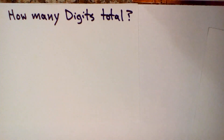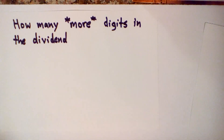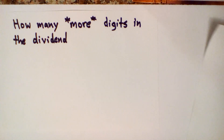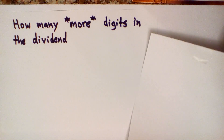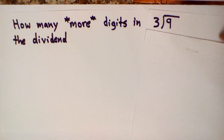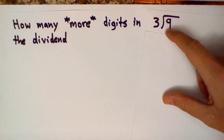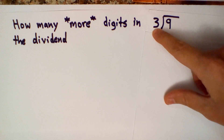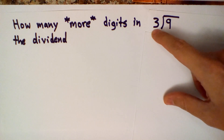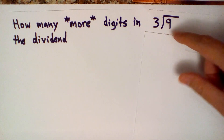In division, on the other hand, we want to ask: how many more digits are in the dividend? So let's look at some examples. This is the dividend and this is the divisor. One digit here and one digit here — so how many more digits in the dividend? None! Zero more digits.